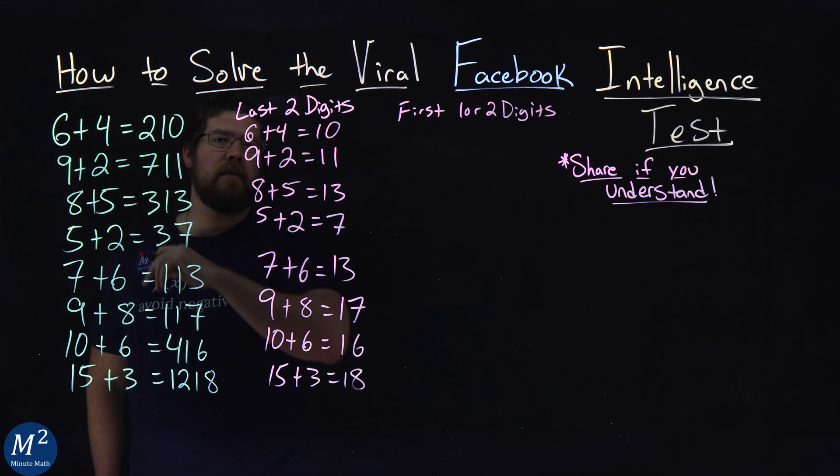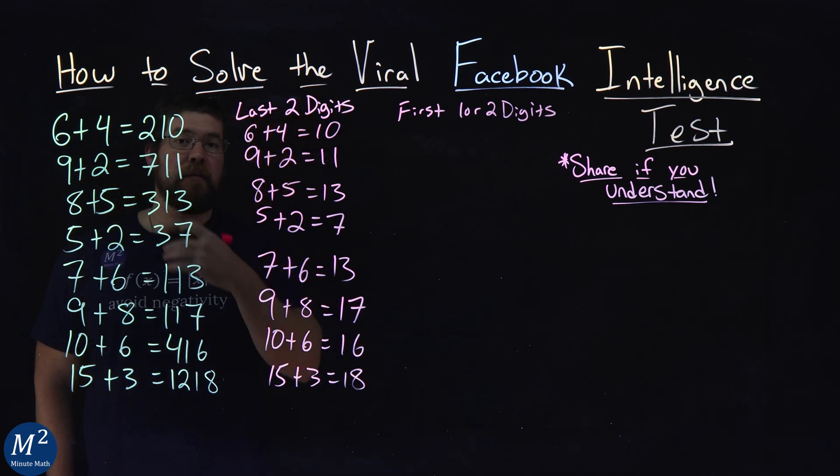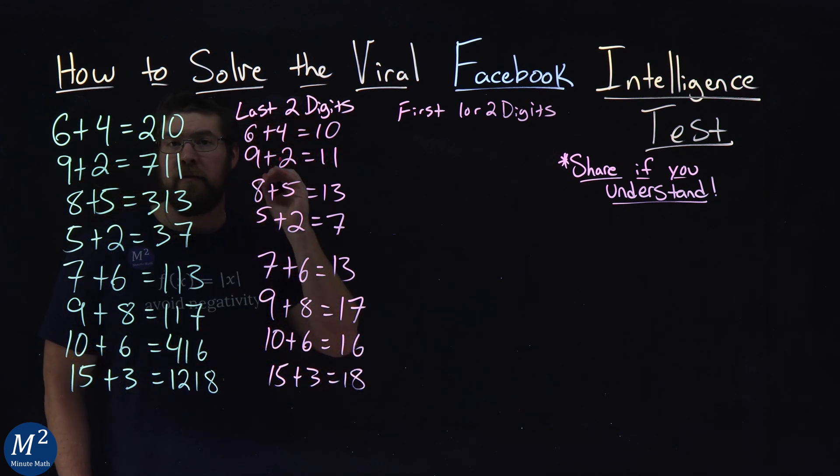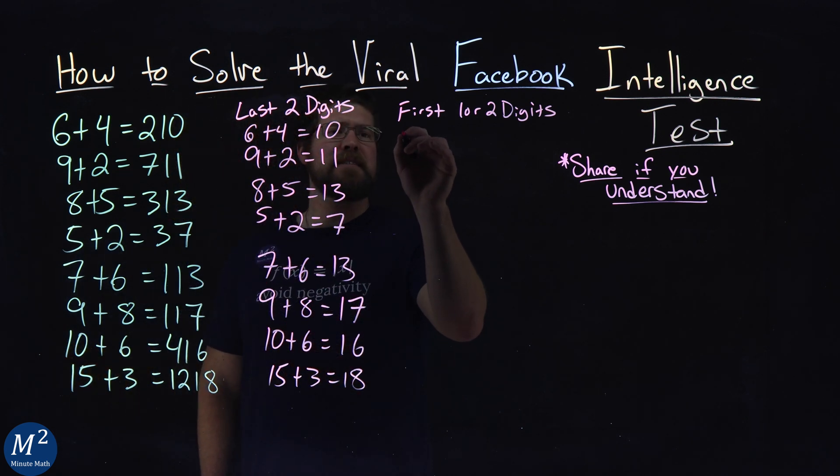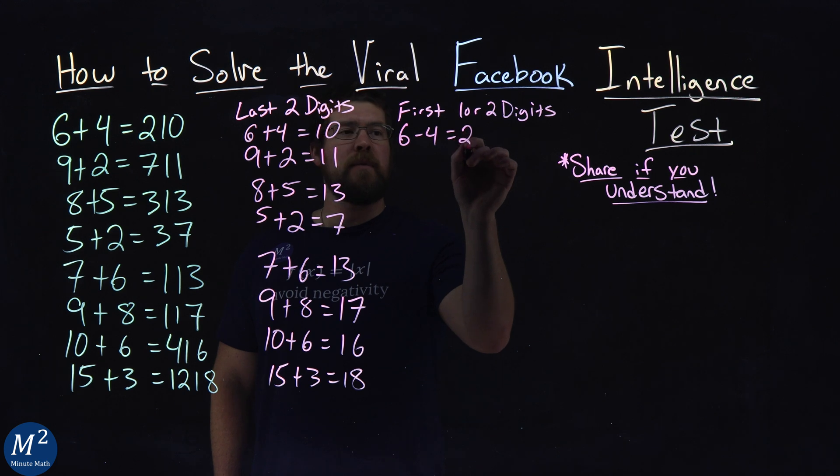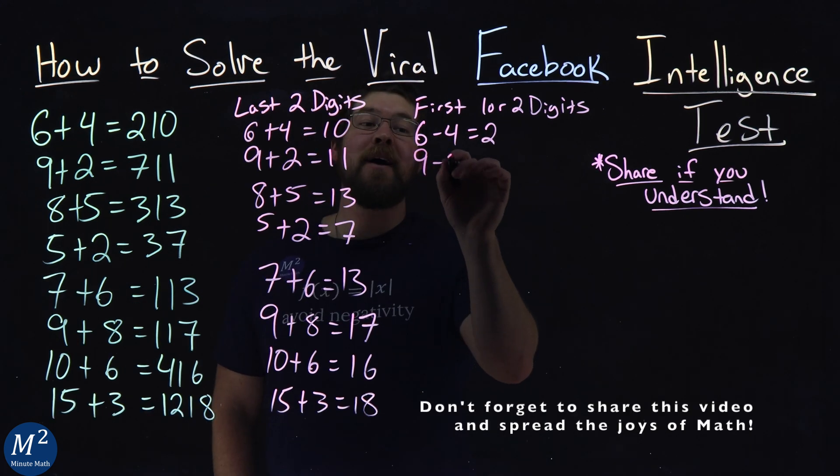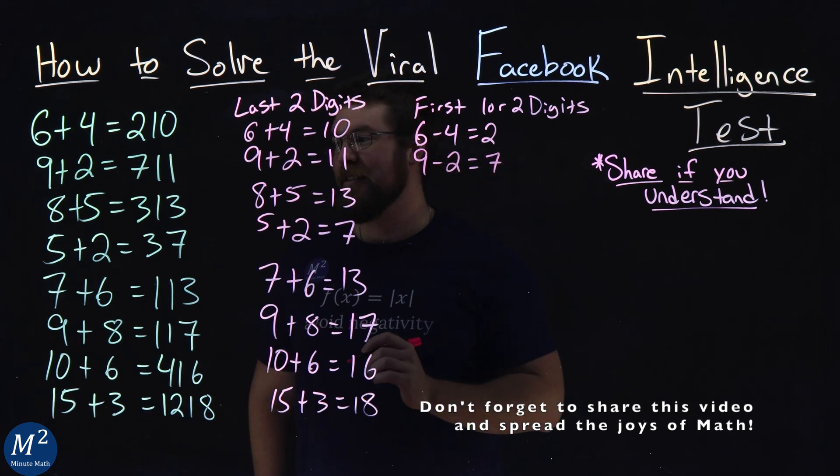Six and a four give us the two. Nine and two give us a seven. Eight and five give us a three. I'm thinking subtraction. A six minus a four gives me the two. A nine minus the two gives us a seven here.